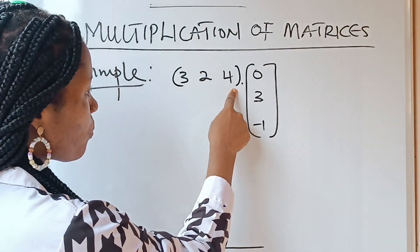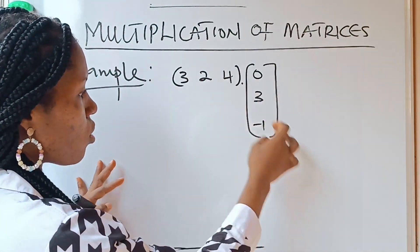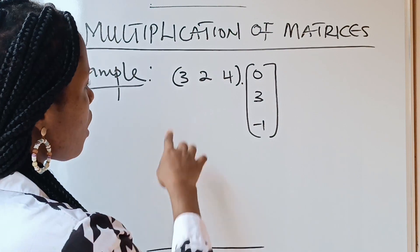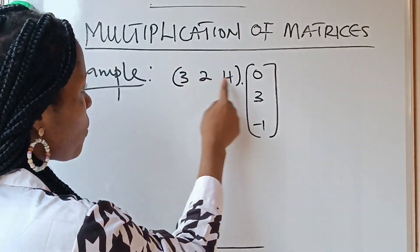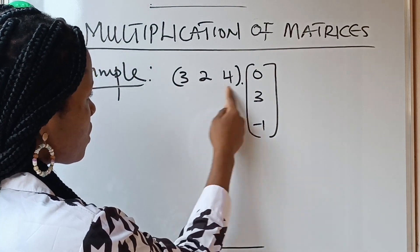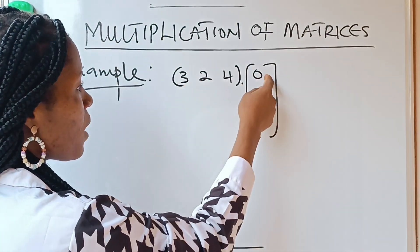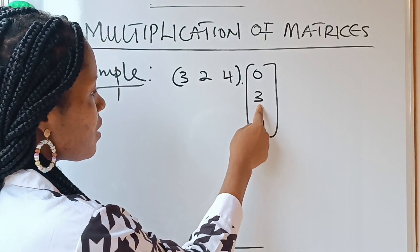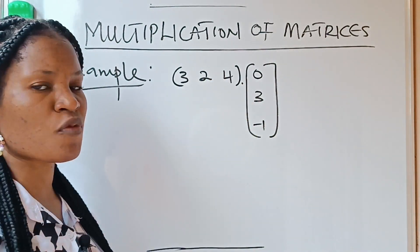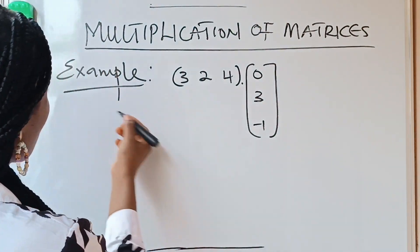This is one column. This is one row. This is one column. So when you multiply one row and one column, you are going to get one number. This first number will multiply this first number. So the first will multiply the first. Second will multiply the second. Third will multiply the third. And as you are multiplying them, you are just forming one single number.